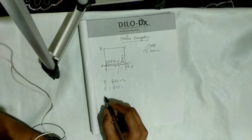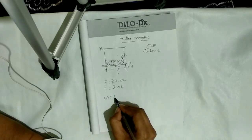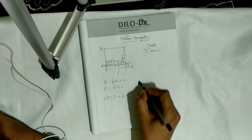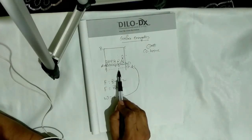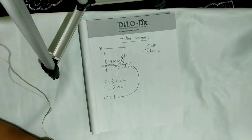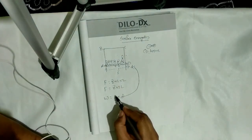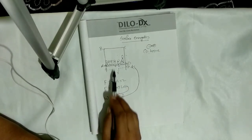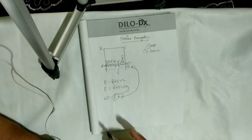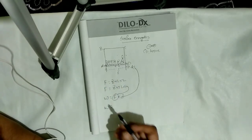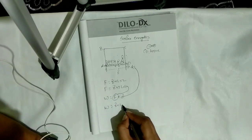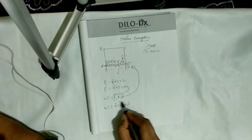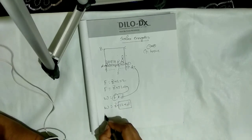Now for surface energy: work done equals force times displacement. The displacement is d — you have pulled the wire a distance d. The force is the one we derived: surface tension acting along length L across two surfaces, so work done equals surface tension × 2L × d.